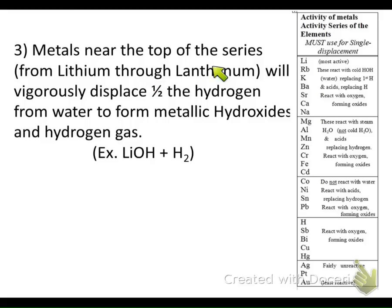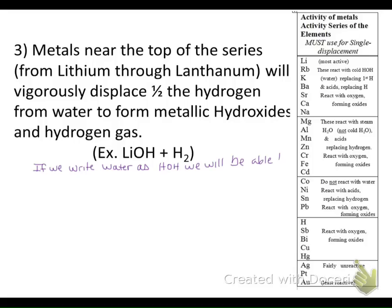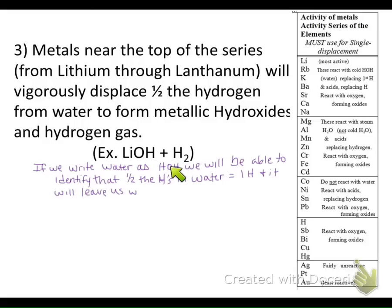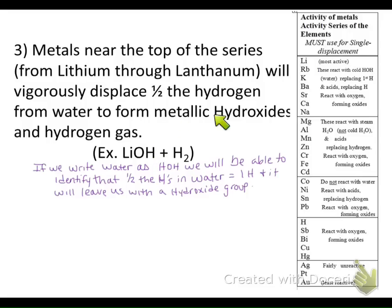Metals near the top of the series from lithium to lanthanum will replace half the hydrogens from water to form a metallic hydroxide and hydrogen gas. To show this, we write water as HOH — because that H represents half of the hydrogens in water, which equals one hydrogen. This leaves us with a hydroxide group, helping us form a metallic hydroxide as a product.